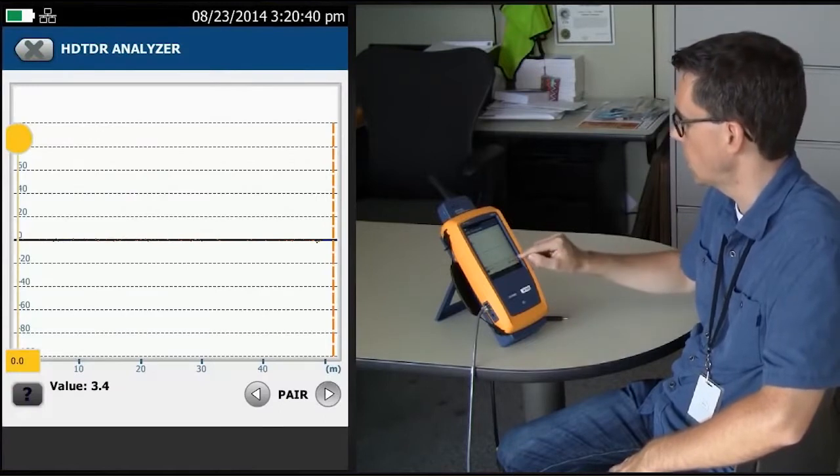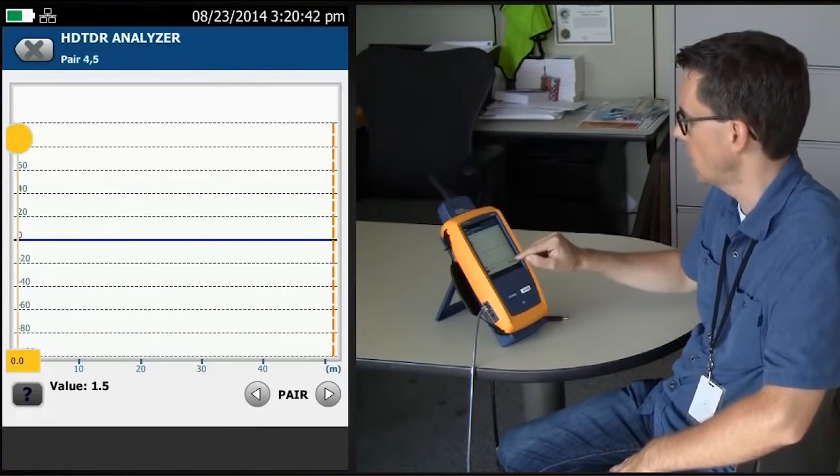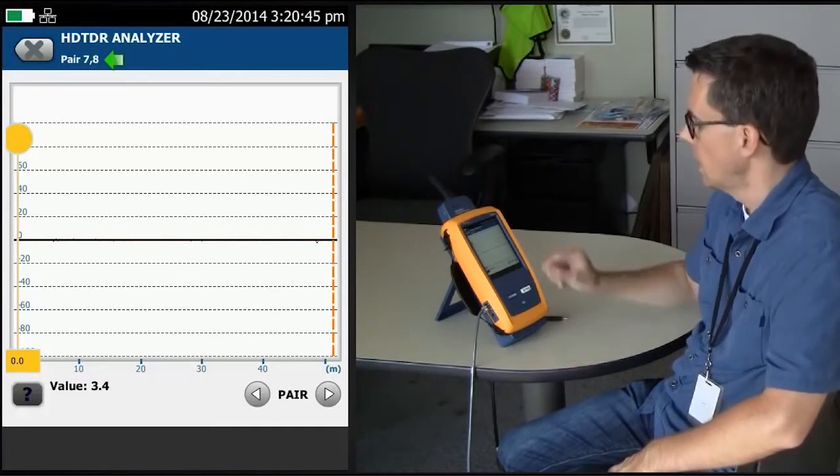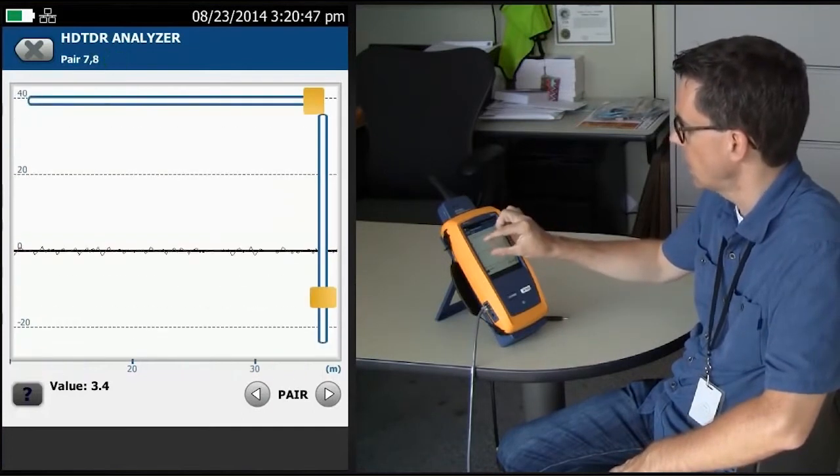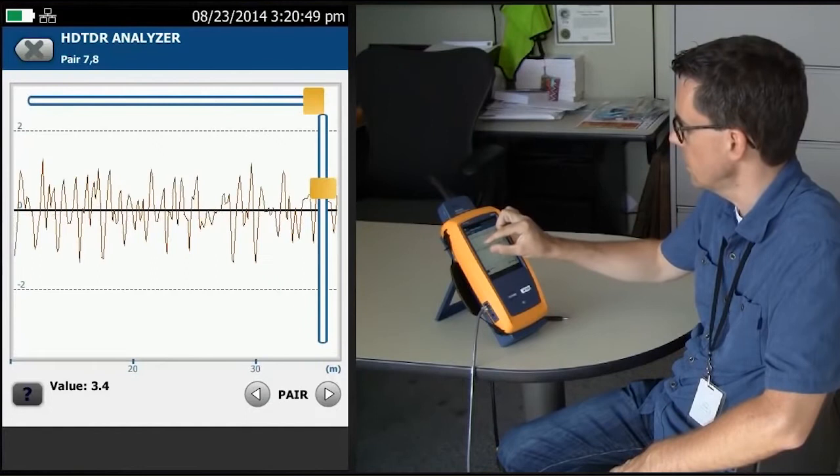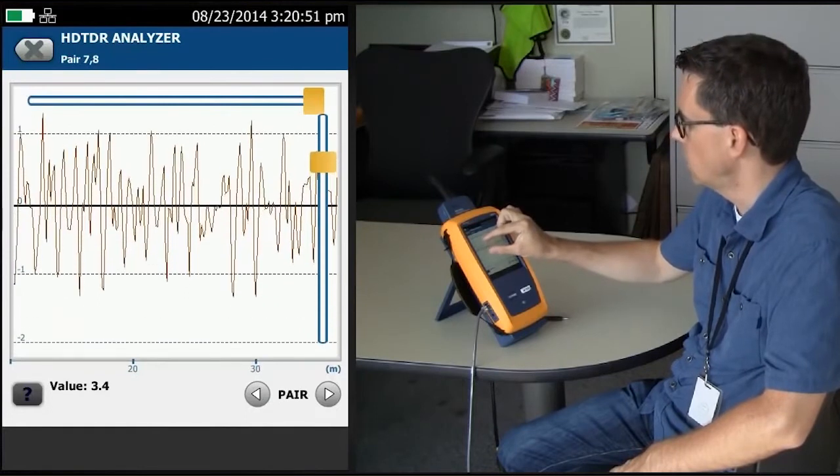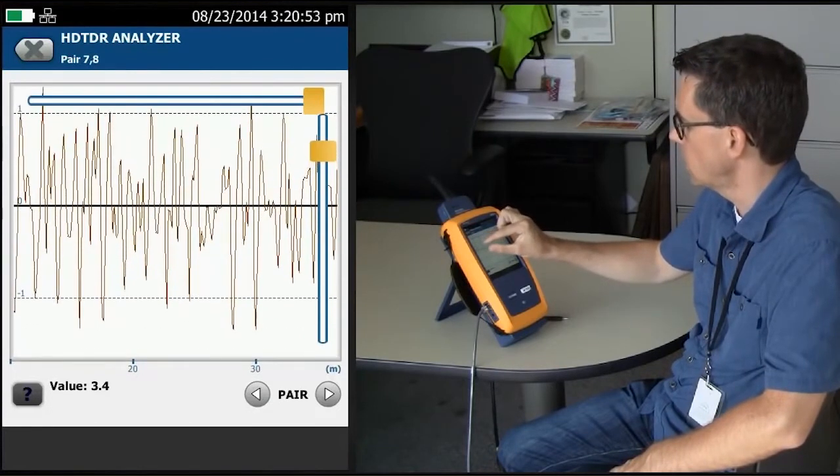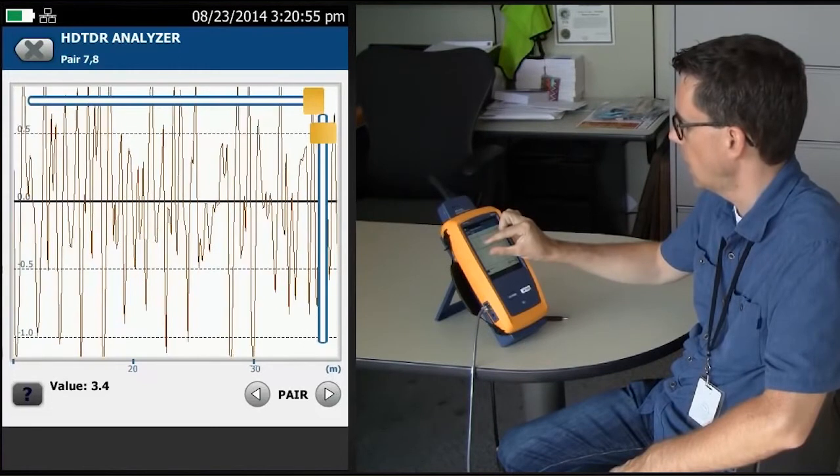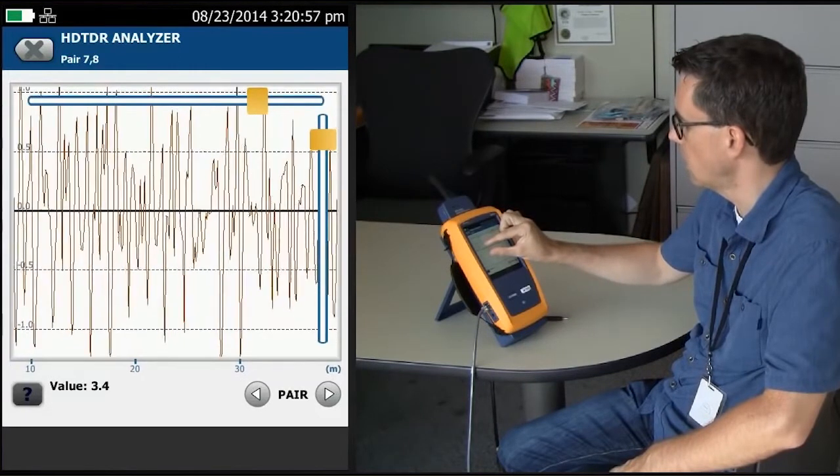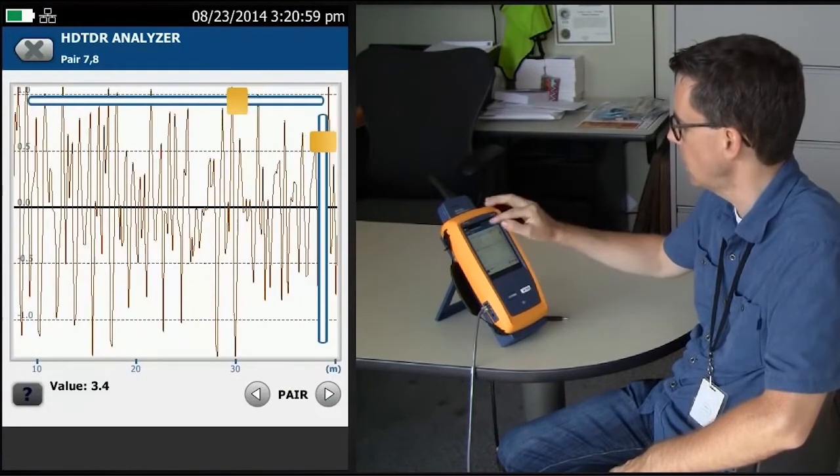And we're going to go and look at our pair 7-8. I'll tap that until I see 7-8 in the top left. And what I need to do is I need to zoom in. Now, how far do you zoom in? I like to zoom in just to the point where the half percentage point appears.